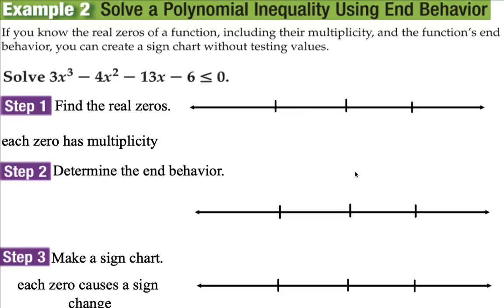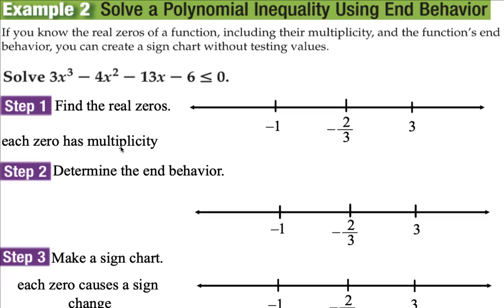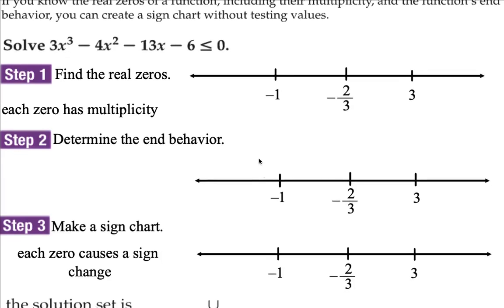Here's another example. If we know the real zeros, their multiplicity, and the function's end behavior, we can create a sign chart without testing values. We find the real zeros, set each factor equal to zero, and place them on the number line — for this cubic polynomial I found three real zeros, each with multiplicity 1. The end behavior: since the leading coefficient is positive, as x goes to positive infinity the function goes to positive infinity, and as x goes to negative infinity the function goes to negative infinity.